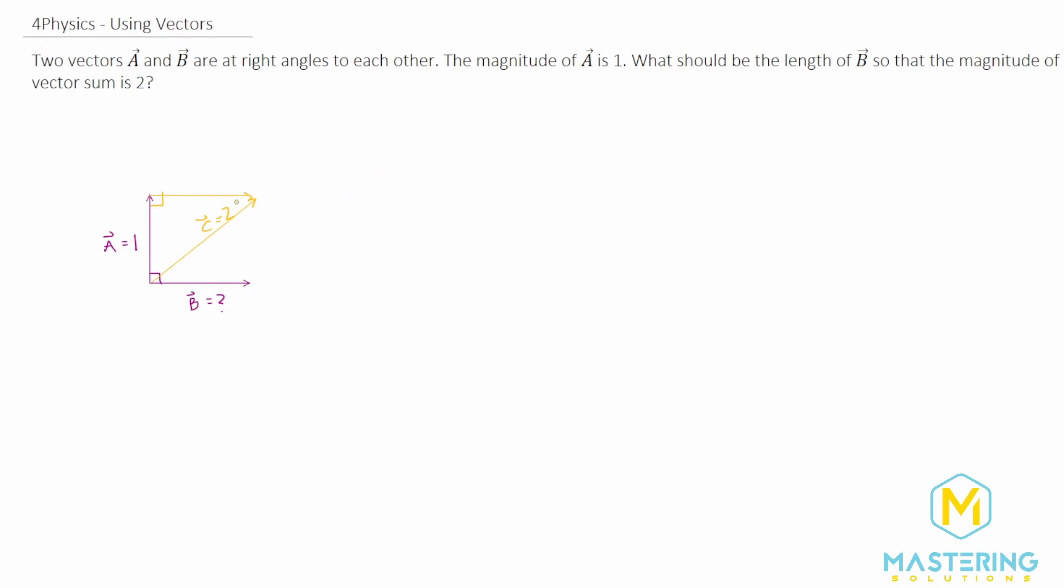So since we have a right triangle, we can use Pythagorean's theorem. Pythagorean's theorem is a squared plus b squared equals c squared. And we're trying to find b. So let's subtract a squared from both sides. So now we have b squared is equal to c squared minus a squared.